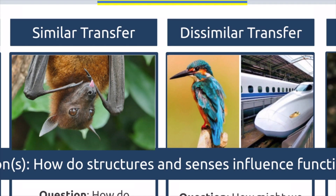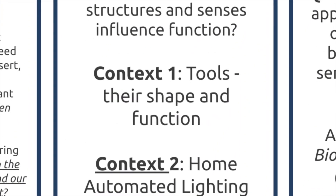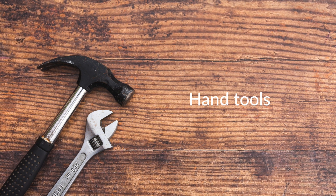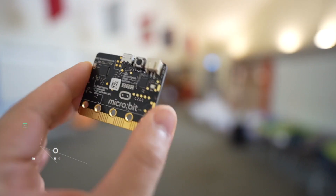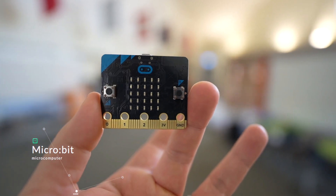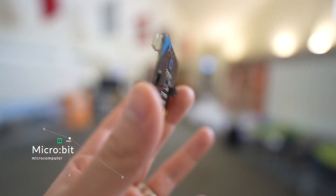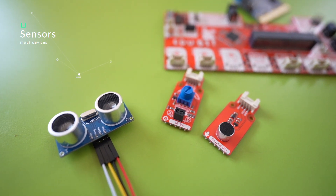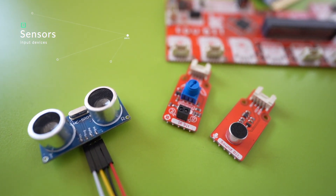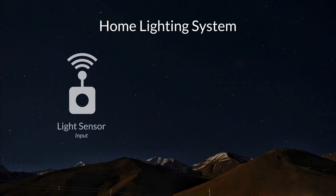For my storyboard, the similar transfer context I included was having students examine tools and objects that people use in their daily lives and look at the relationship between the structures of these items and their function. Another context I added was having students look at devices that use sensors and computer processing — examples showing how devices have sensors within structures that gather information and process it to generate an output for a particular function.